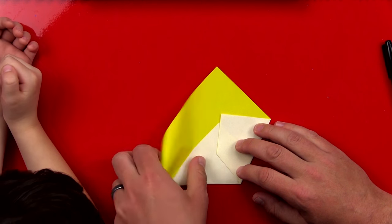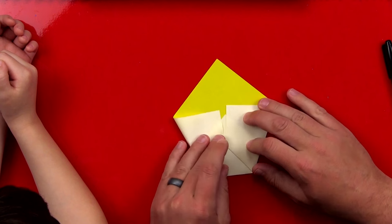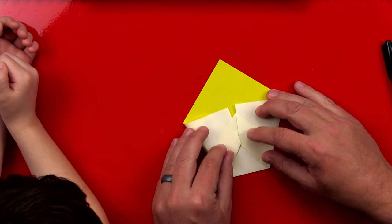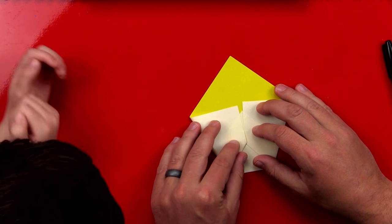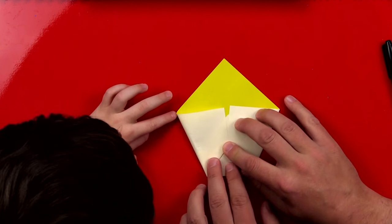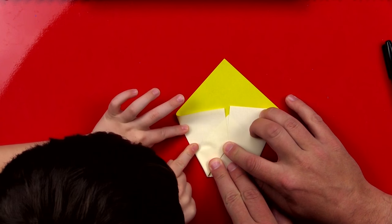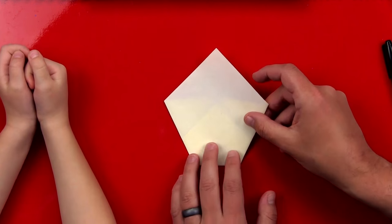Now we're gonna repeat the same step on the left side. Fold it up to the middle. That's a little off, and that's okay. So we're gonna fold it up. There we go. Cool! Okay, now we're gonna flip it over.